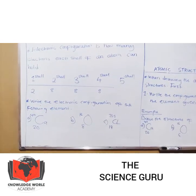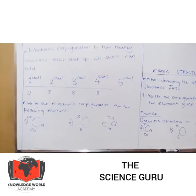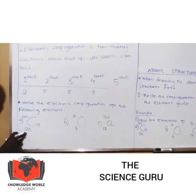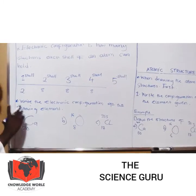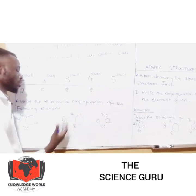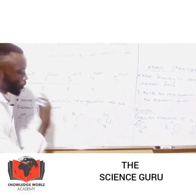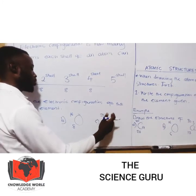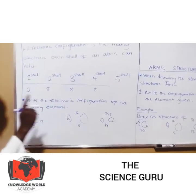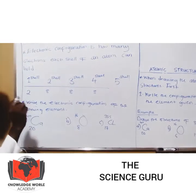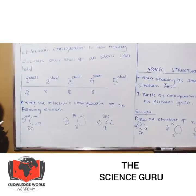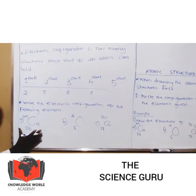So, example: write the electronic configuration of the following elements. You have calcium with 20 electrons, nucleon number 40. Then oxygen with 16 electrons, nucleon number 16. Then 17 electrons, nucleon number 35.5. When I'm talking of the nucleon number, I don't mean the nucleus. This is not an error. So, write the configuration of this. I'm writing the configuration of calcium. I count.